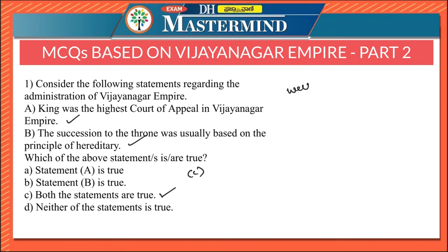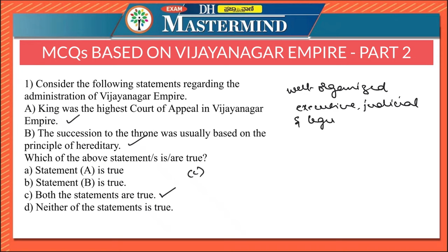The Vijayanagara administration was well organized and the king enjoyed absolute authority in executive, judicial, and legislative matters. He was the highest court of appeal. The second statement says that the succession to the throne was usually based on the principle of hereditary.